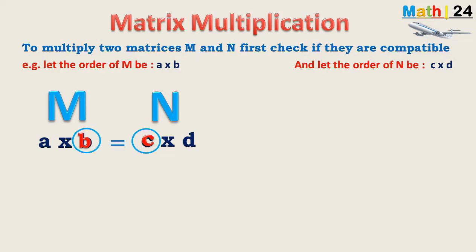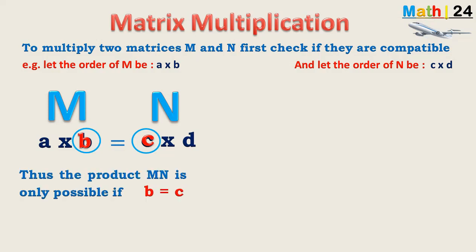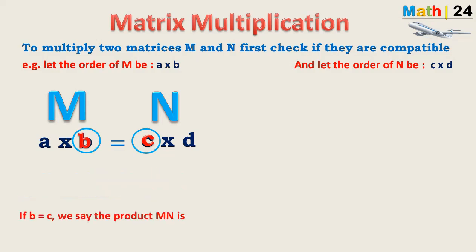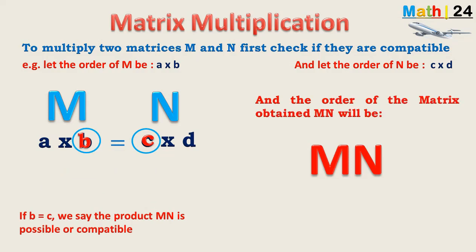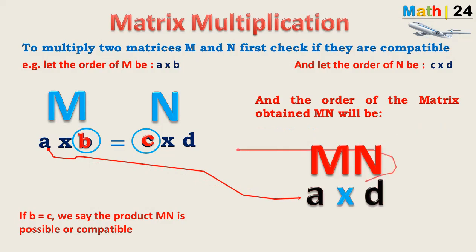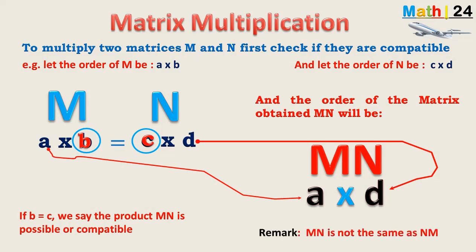For the product MN, the number of columns in matrix M must equal the number of rows in matrix N — that is, B must equal C. If B is not equal to C, the product is not possible. If B equals C, we say the product MN is compatible, and the order of the resulting matrix will be A×D — where A comes from the first matrix and D comes from the second matrix.